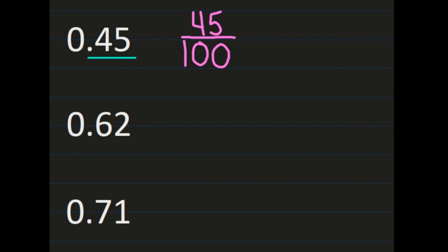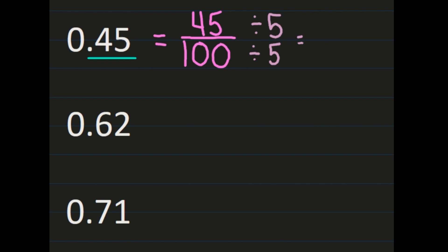Just like the last example, we need to simplify. 45 and 100 share a common factor of 5, so we divide both numerator and denominator by 5. 45 divided by 5 is 9, and 100 divided by 5 is 20. Since 9 and 20 don't share any more common factors, 9 over 20 is your final answer. So 45 hundredths is equal to 9 twentieths.